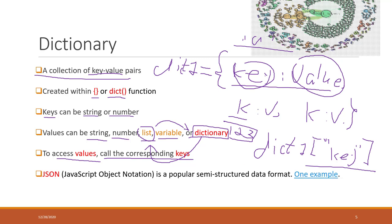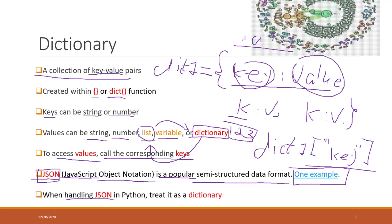When we talk about dictionaries, I also want to introduce JSON. JSON stands for JavaScript Object Notation — it is a very popular structured data format nowadays. When we handle JSON in Python, we just treat it as a dictionary.